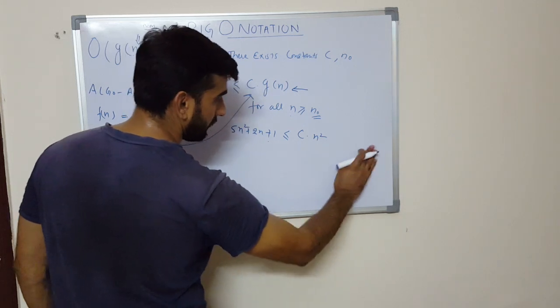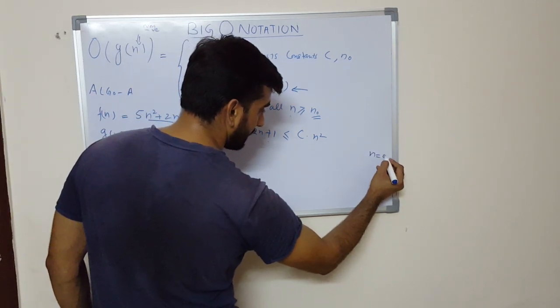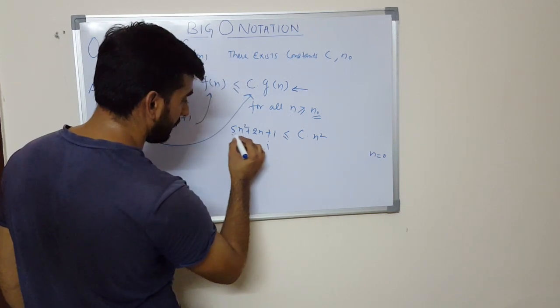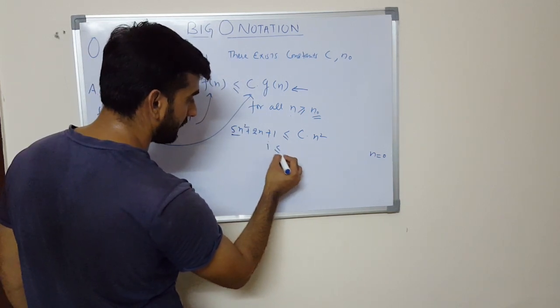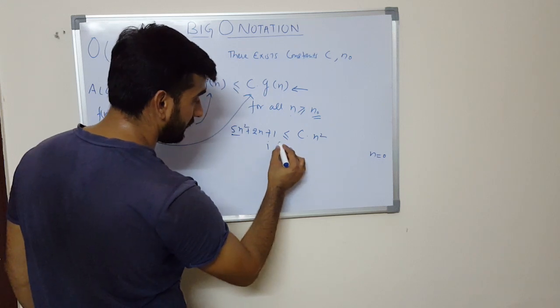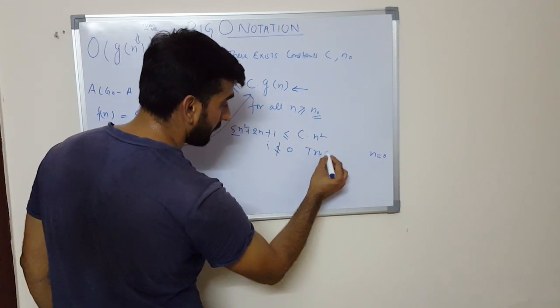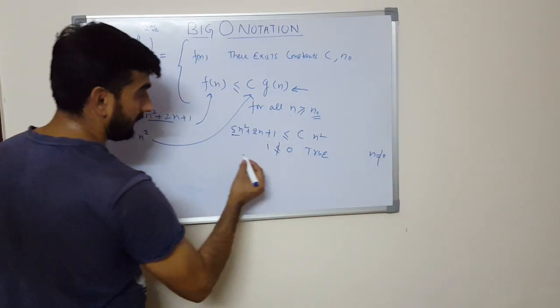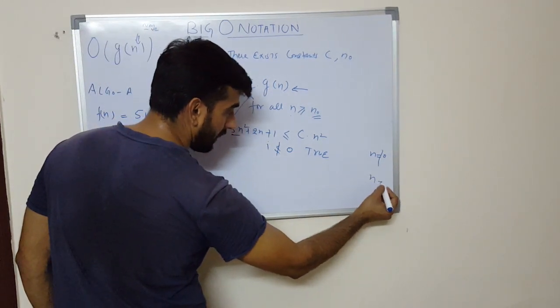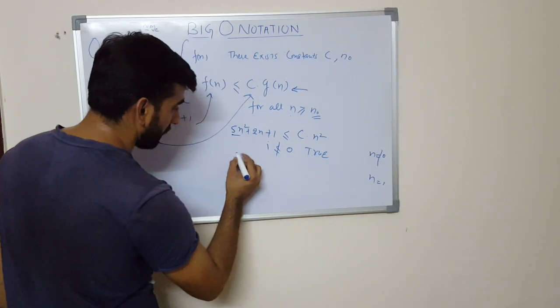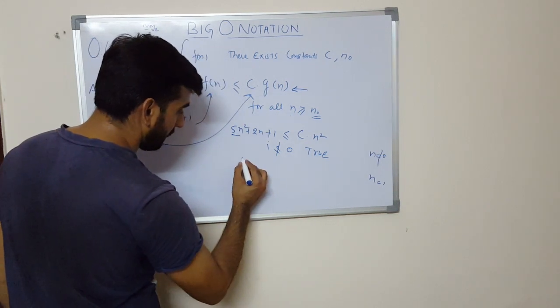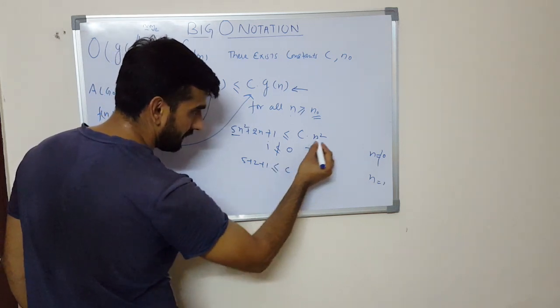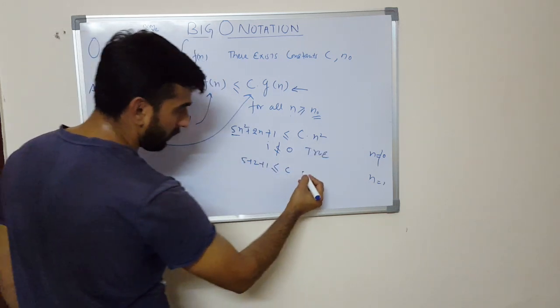So if I have to find the value from this expression which stays true, if I take n as 0 for this first iteration and try to find out, so this will be 0, 0, 0, 0 plus 1 is less than 0—this is not true. So n cannot be 0. And if I take n as 1 and I put the value in this, it will become 5 + 2 + 1.